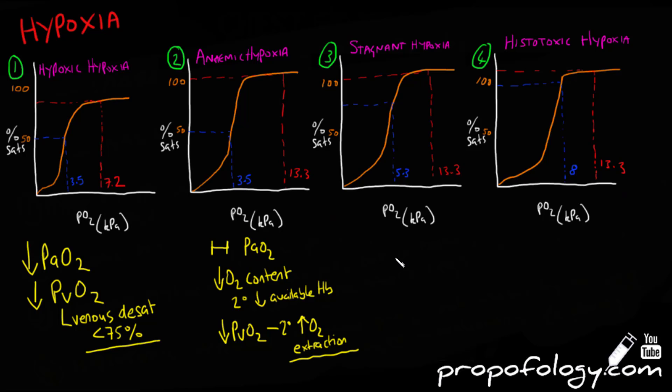Graph 3 is stagnant hypoxia. You'll see that the PaO2 is normal, the arterial saturation is normal, and tissues in need of oxygen are not receiving the oxygenated blood due to perfusion failure, such as in cardiogenic shock, like we've said, where the pump isn't working.